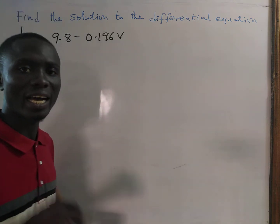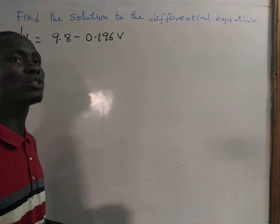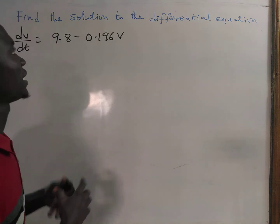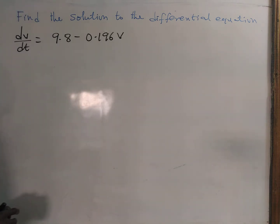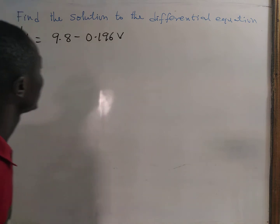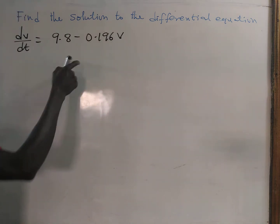In this tutorial video, we are going to find the solution to the differential equation dv/dt equals 9.8 minus 0.196v. So join me as we go through this simple question.